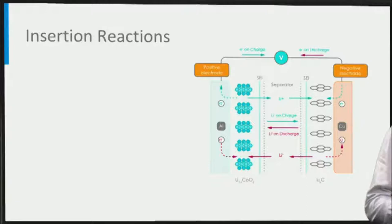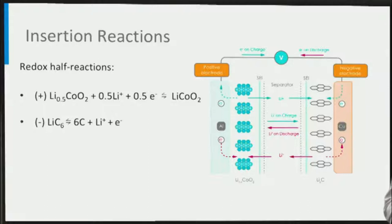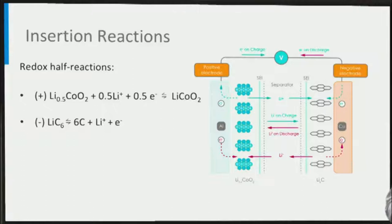The chemical reactions that occur in batteries involve electron transfer, which are called redox reactions, referring to reduction and oxidation. From the battery redox reactions we can calculate the capacities of the electrodes, which you can practice during the exercises after this lecture. Here you see the redox reactions of both electrodes, which to the right represent discharging of the battery. These are called insertion reactions because the lithium ions are inserted into a host material at the negative and the positive electrode as the battery charges and discharges respectively.